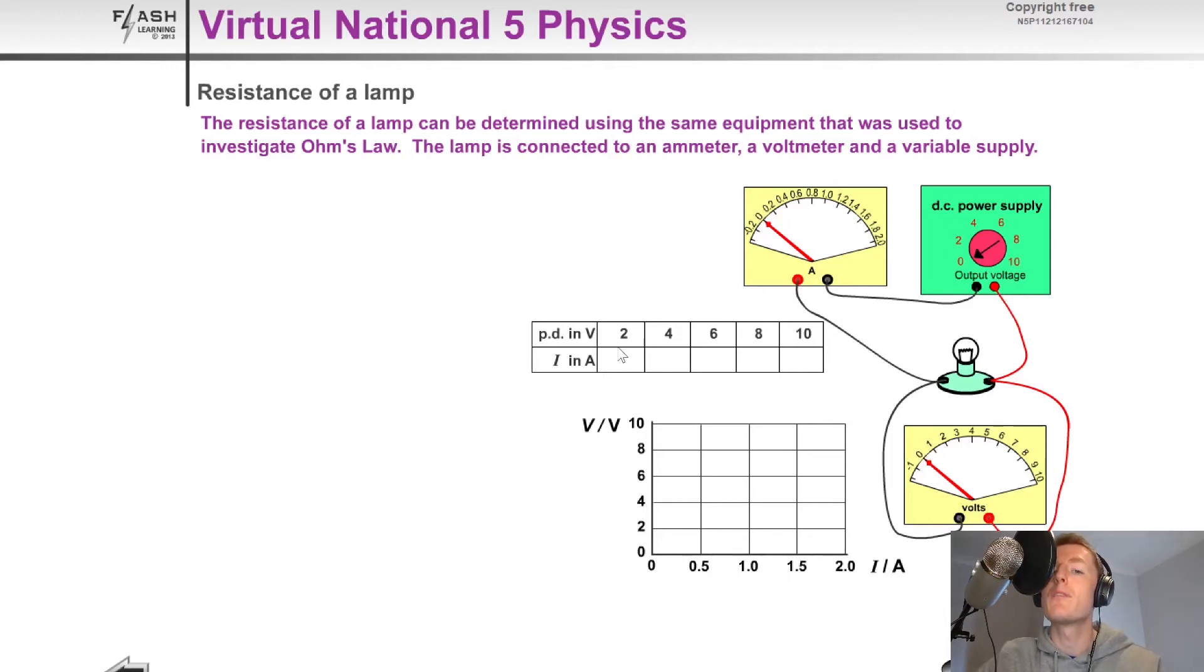So in this example, if you were to change the voltage in even steps of 2 volts and then write down the current value, here's a set of sample results for 2, 4, 6, 8 and 10 volts, where if you plot this on a graph of voltage against current, you'll notice that we no longer get a straight line.